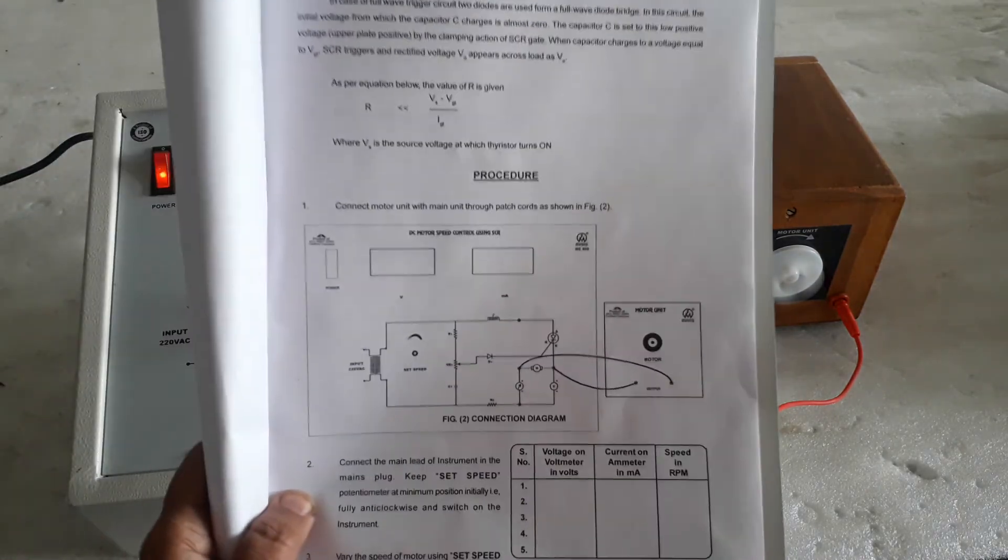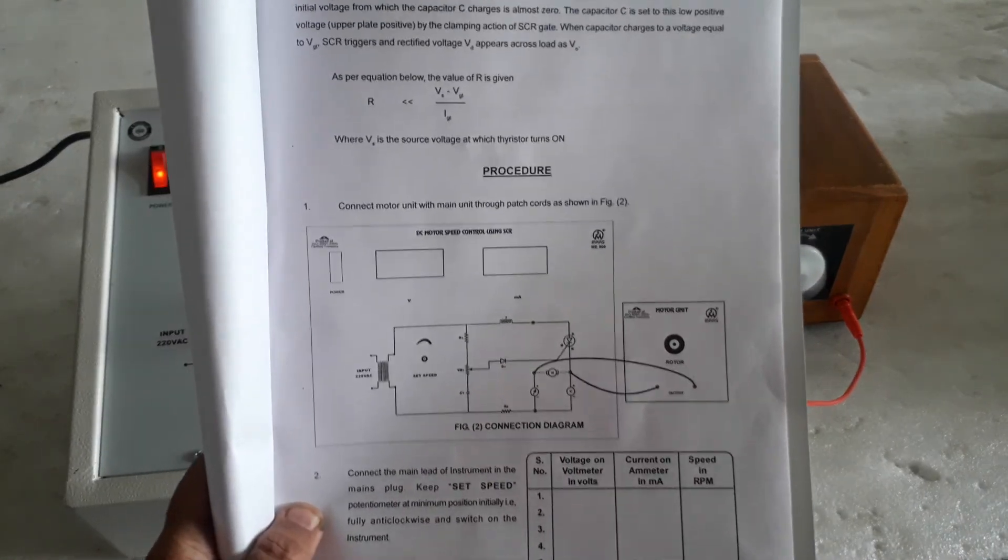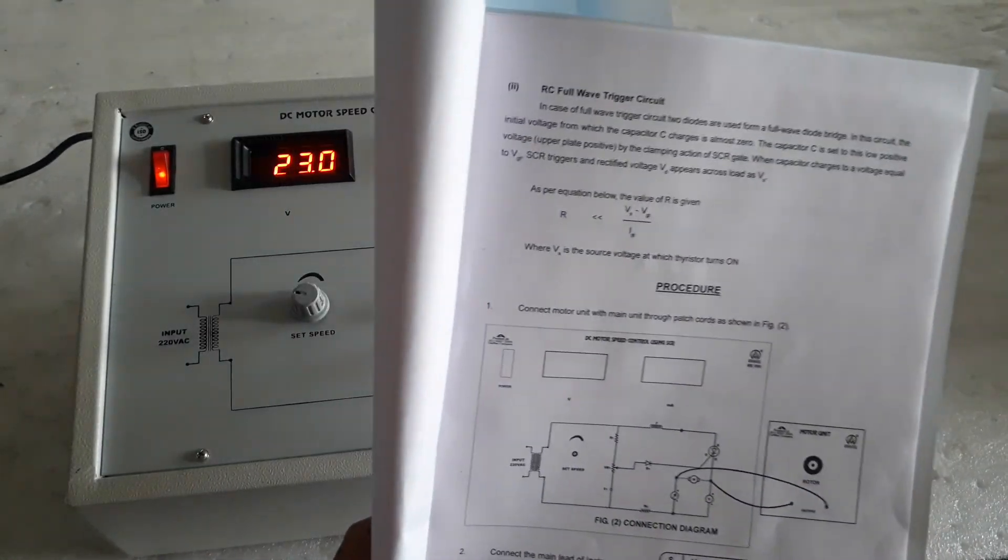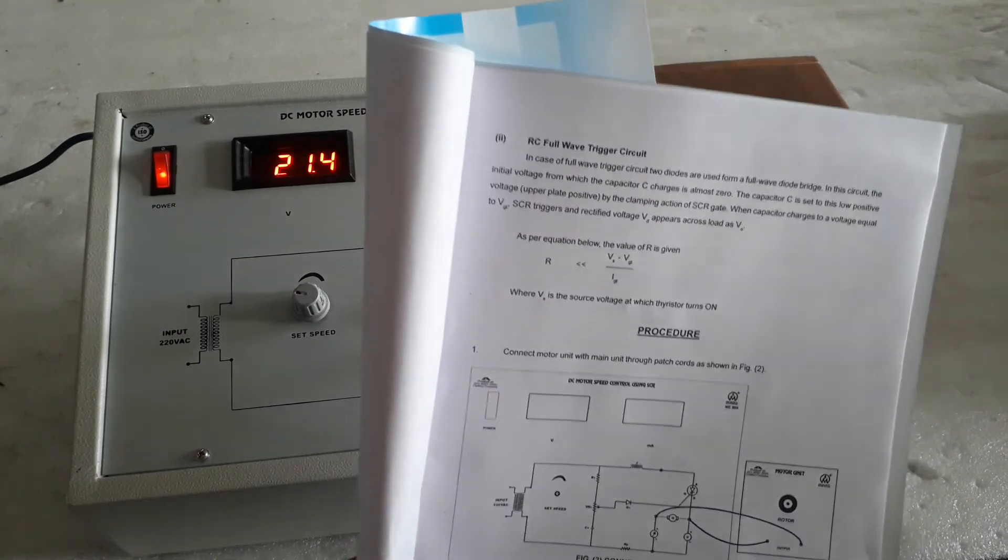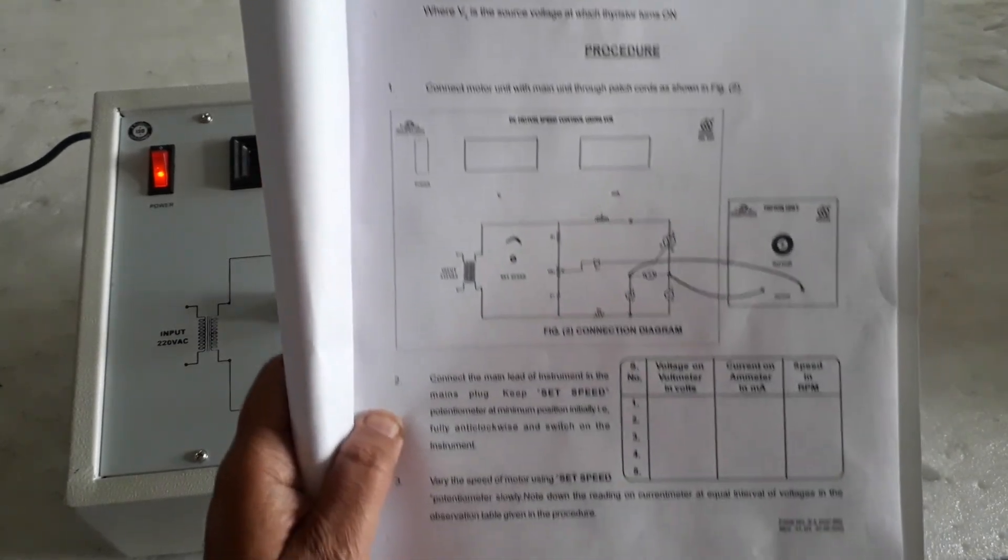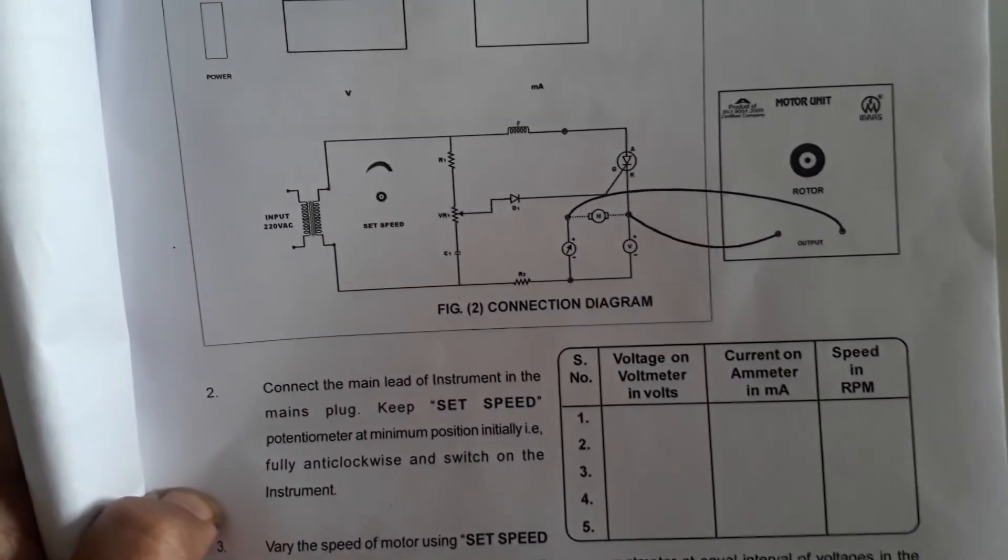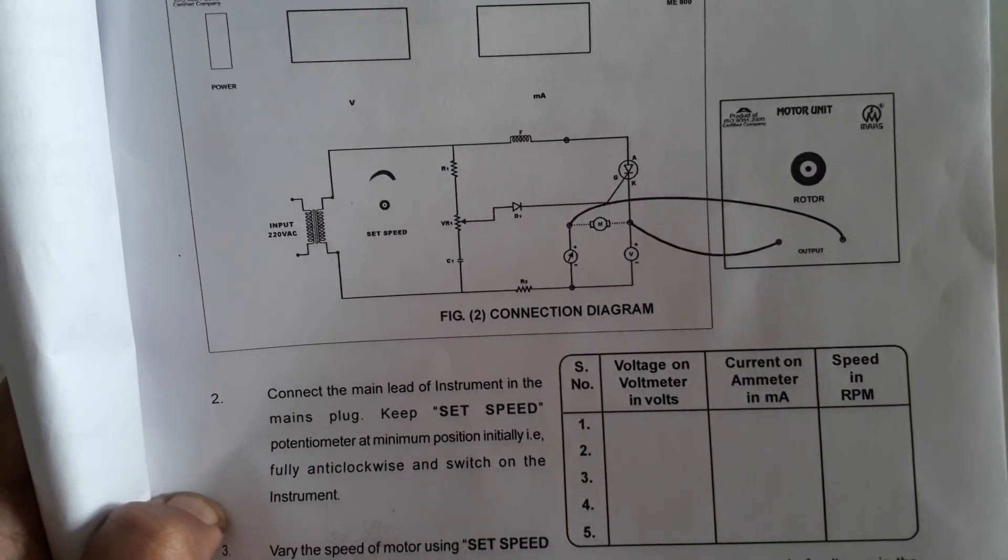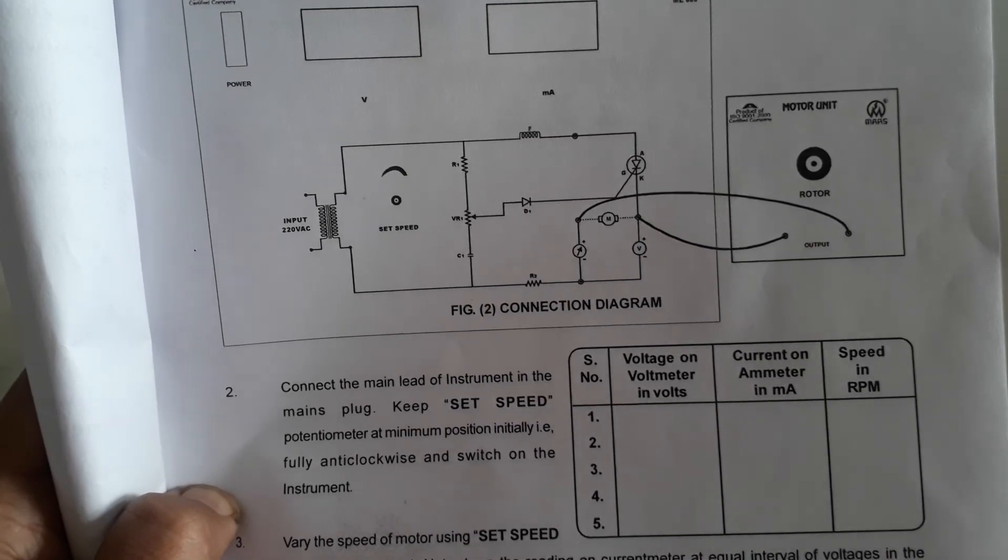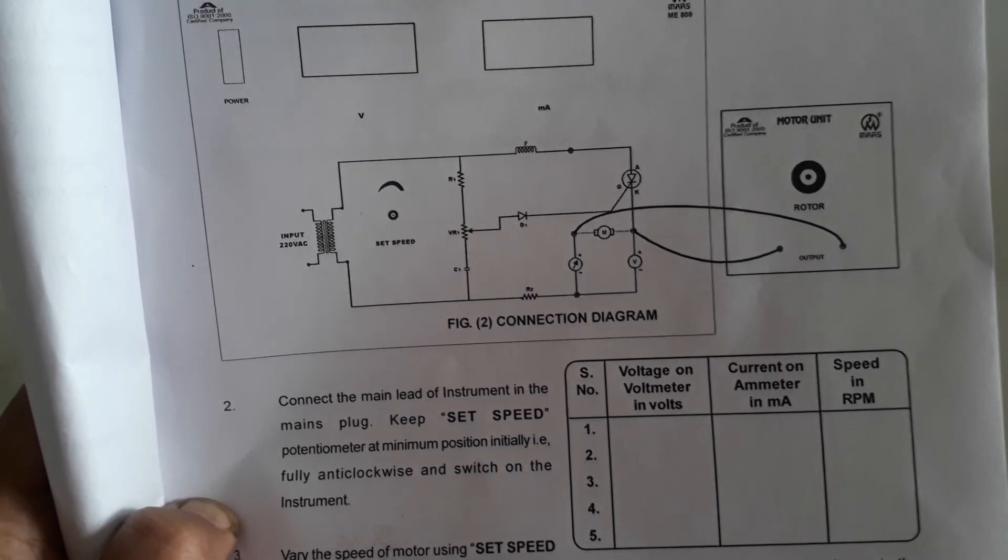And here is the manual for DC motor speed control using SCR. Here is the diagram, procedure, and table showing voltmeter voltage, current, and speed in RPM.